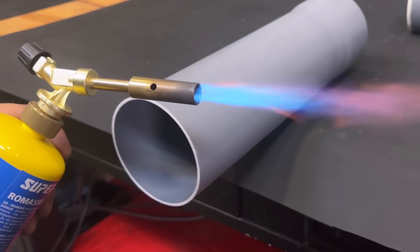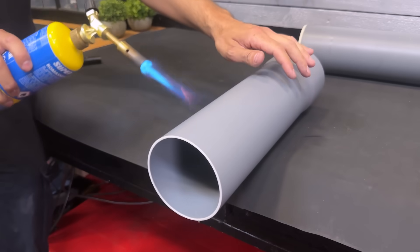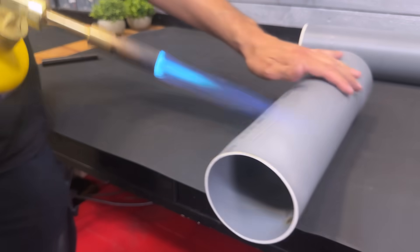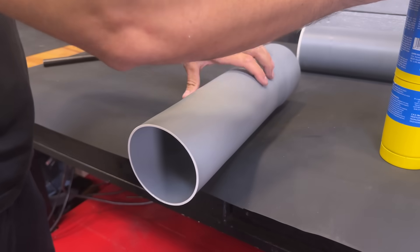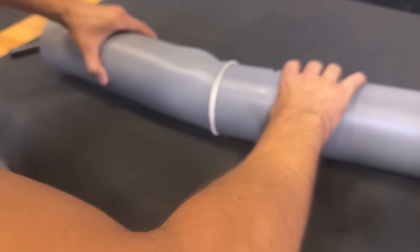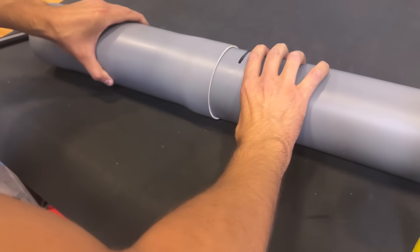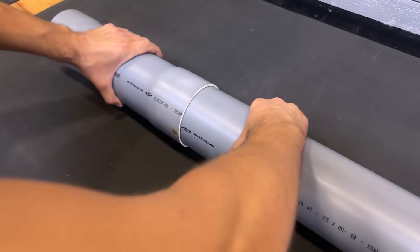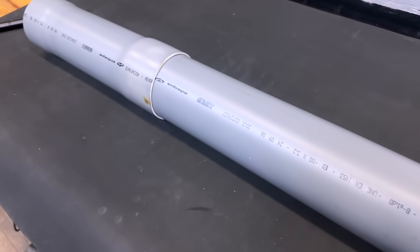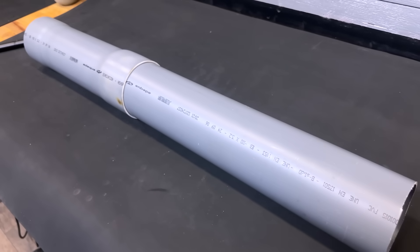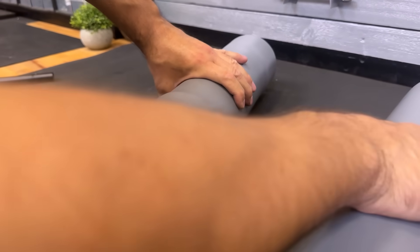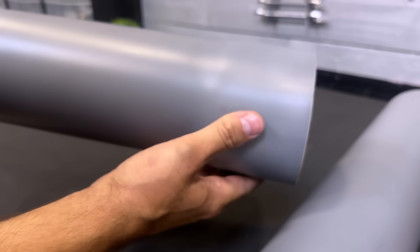We must heat the ends with a blowtorch to expand them. We insert one pipe inside the other so that it expands to the correct size. This way we can put these caps on the ends.